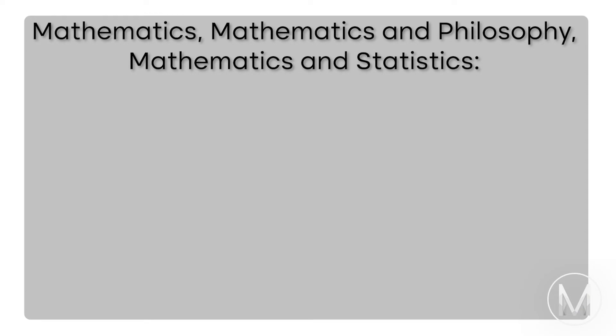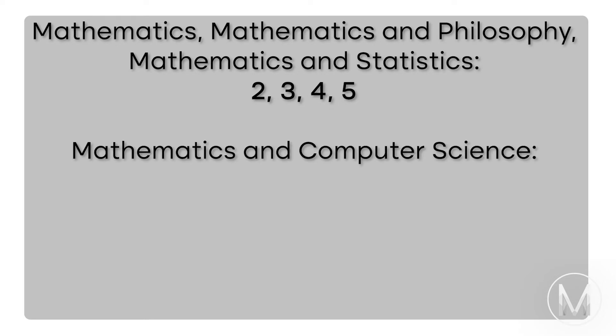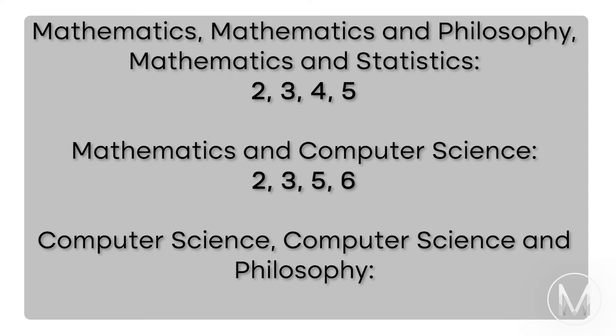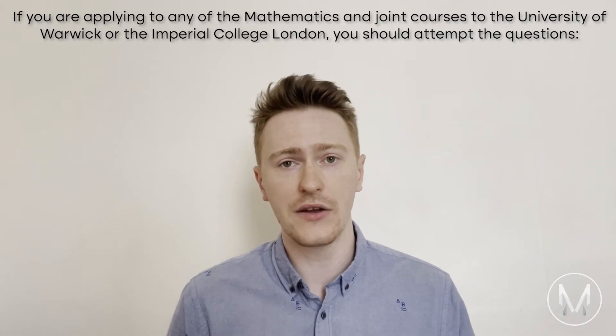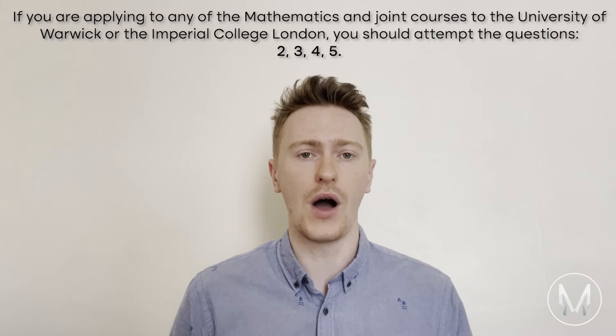For example, if you're applying to the University of Oxford in 2022, you have to attempt the following questions depending on your degree. If you plan to take Mathematics, Mathematics and Philosophy, or Mathematics and Statistics, you should attempt questions 2, 3, 4, and 5. If you plan to take Mathematics and Computer Science, attempt questions 2, 3, 5, and 6. And if you plan to take Computer Science or Computer Science and Philosophy, tackle questions 2, 5, 6, and 7. If you're applying to any mathematics or joint courses at the University of Warwick or Imperial College London, attempt questions 2, 3, 4, and 5.